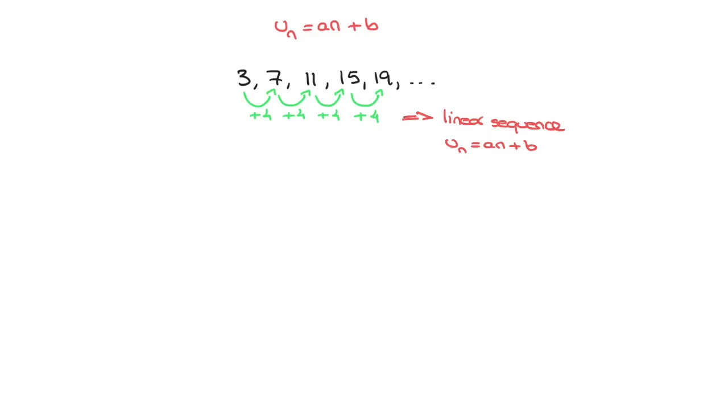The method comes in two equations. The first is a is equal to the difference. The second equation is a plus b equals to the first term of the sequence, which is often just called u1. And those are the two equations.